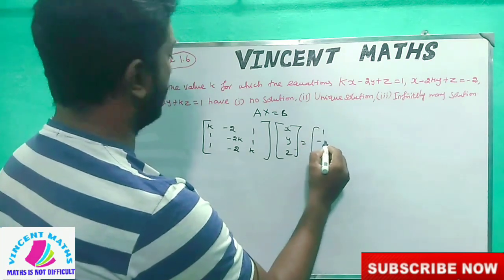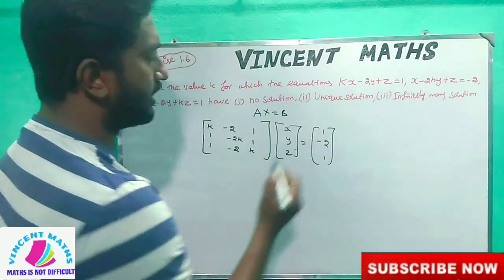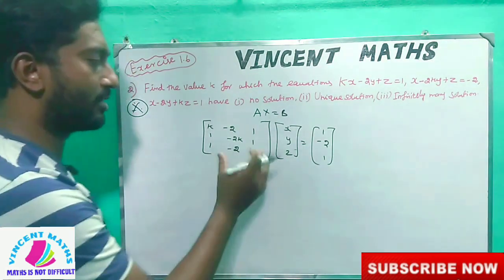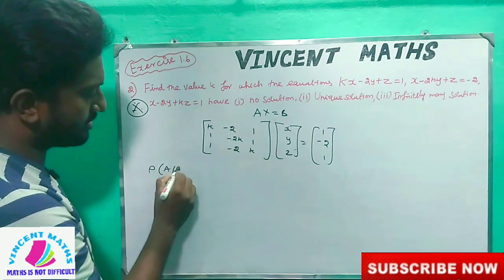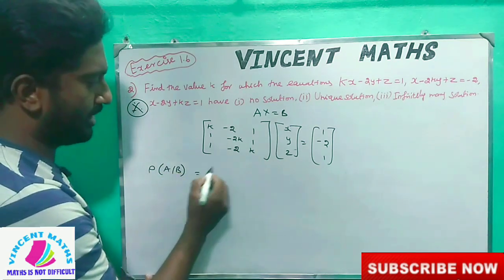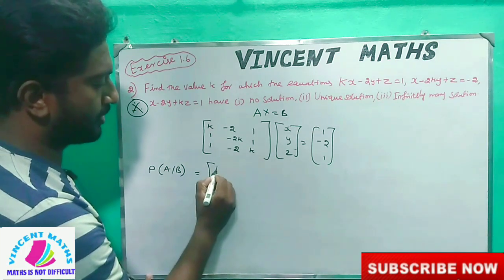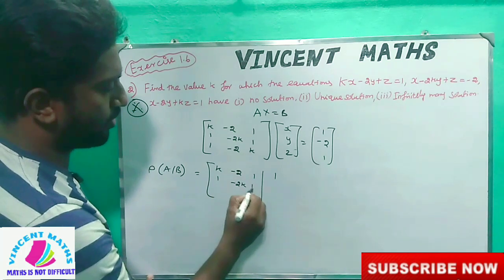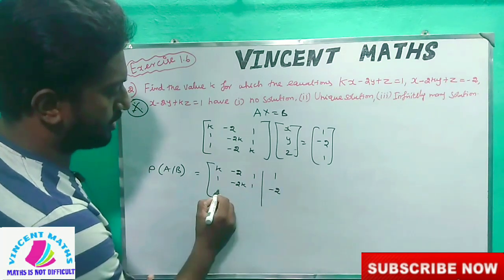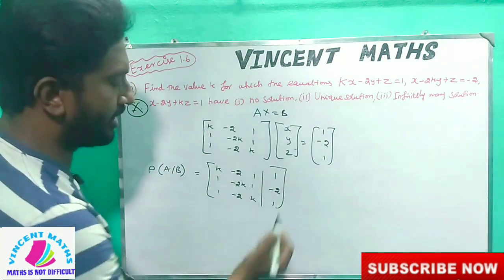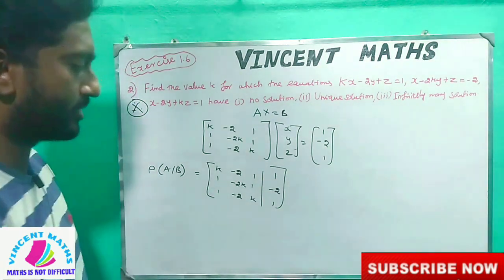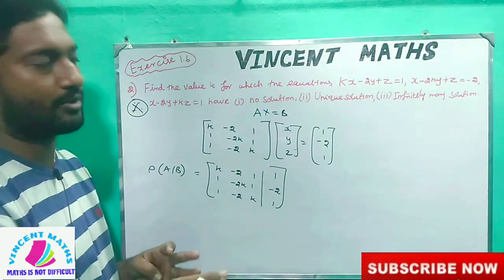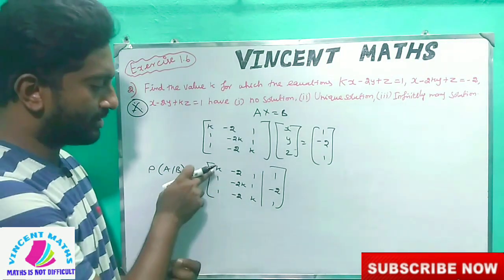Completing the augmented matrix [A|b]: entries include 1, 1, 2, 1, 1, 1, 2, 1, 2, 1, minus 2, k. This is the A|b format we have to work with. We need to find the mu and lambda values — we need to determine what values make the system consistent.